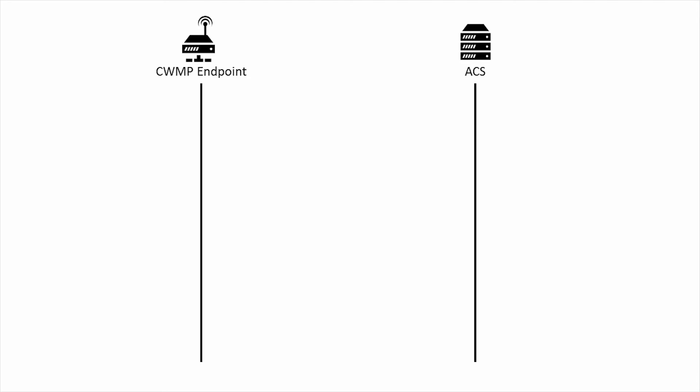Let's take a look at an overall session. First, the CPE initiates a TCP session with the ACS and negotiates a secure connection. The CPE begins every session by sending an inform RPC to the ACS, with arguments that include the event that caused the session. This is done over an HTTP POST.